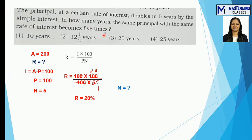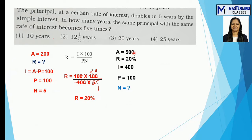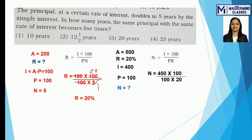The second part asks: in how many years will the same principal become 5 times? Using P = 100 and R = 20% (found above): 5 times means A = 500, so I = 500 − 100 = 400. Using N = (I × 100) / PR and substituting, the 100s cancel, 10 reduces further, and 2×1=2, giving N = 20 years. That is option number 3.